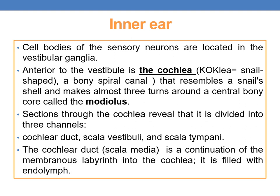The cell bodies of the sensory neurons are located in the vestibular ganglia. Anterior to the vestibule is the cochlea — a snail-shaped bony spiral canal that makes almost three turns around a central bony core called the modiolus. Sections through the cochlea reveal three channels: the cochlear duct (scala media), the scala vestibuli, and the scala tympani. The cochlear duct is a continuation of the membranous labyrinth into the cochlea and is filled with endolymph.